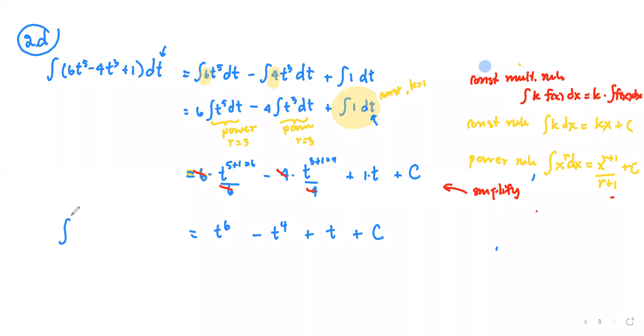So the integral of 6t to the fifth minus 4t to the third plus 1 with respect to t is t to the sixth minus t to the fourth plus t plus C.